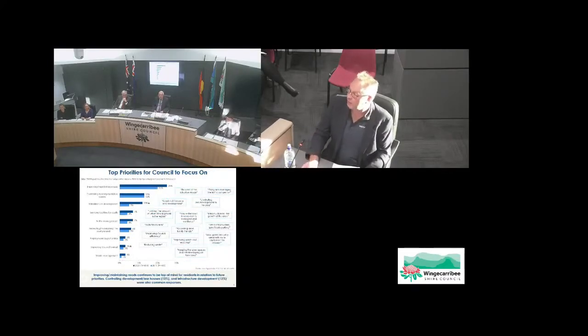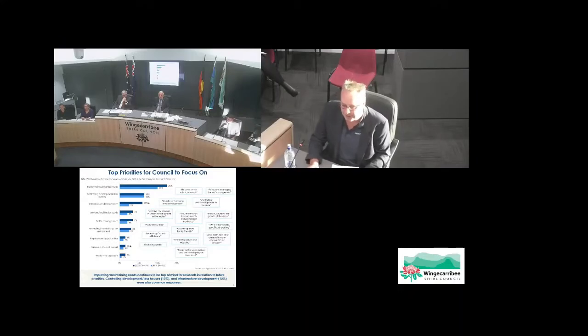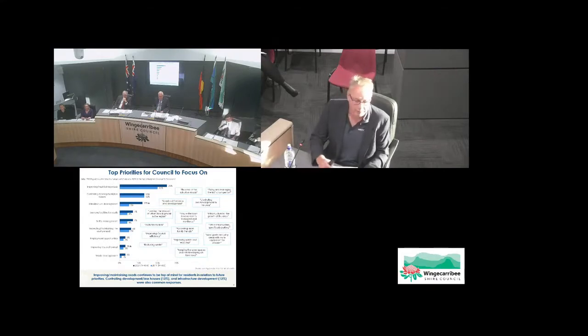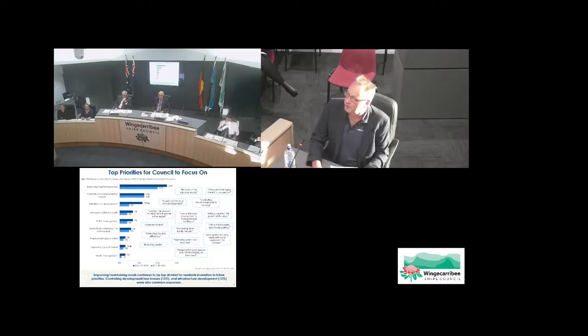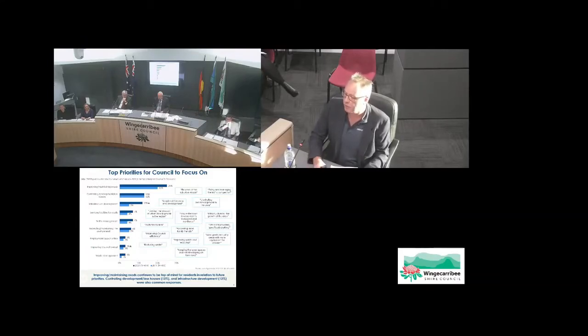The next slide talks about community priorities — another open-ended question to understand what the community wants council to focus on moving into the future. We certainly see that maintaining and improving roads is top. Roads is often code for increased congestion, traffic management, and increased population — and that's been the case qualitatively in other council areas too. This fits with the next couple of points around development and infrastructure, which is something we see across similar council areas, and is perhaps a little more extreme in Wollondilly where balancing population growth and development against traditional values is the key challenge.